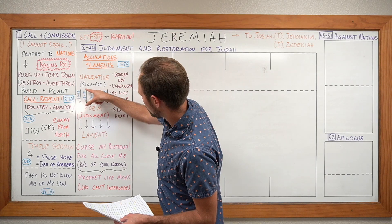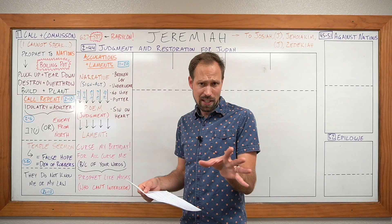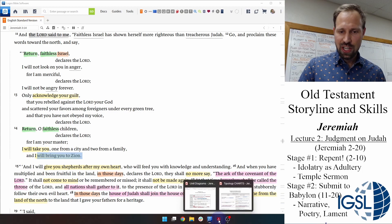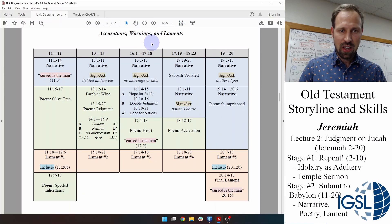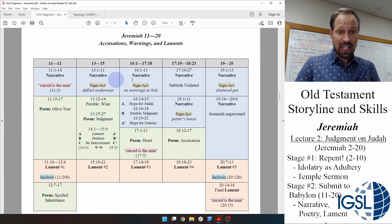This happens five times: chapters 11 to 12, 13 to 15, 16 to 17, 17 to 18, 19 and 20 — narrative, poem, lament, narrative, poem, lament, narrative, poem, lament. The structure isn't perfect, but it's definitely present. Notice how many of these narratives include the performance of a sign act. For example, God tells Jeremiah in chapter 13 to take linen undergarments, march 500 miles to the Euphrates, bury them in the riverbank, return home, wait, go back, retrieve the ruined undergarments, and present them to the people as a sign.